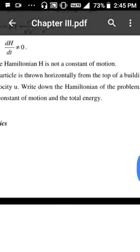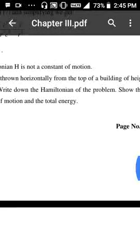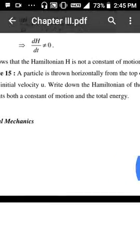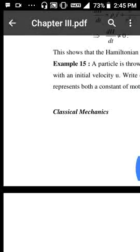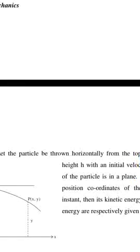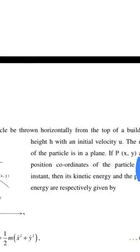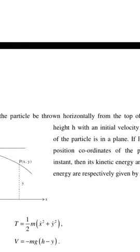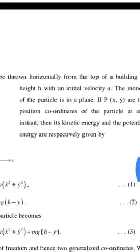A particle is thrown horizontally from the top of a building of height h with an initial velocity u. Write down the Hamiltonian of the problem. Show that H represents both the constant of motion and the total energy. Let the particle be thrown horizontally from the top of a building of height h with an initial velocity u.